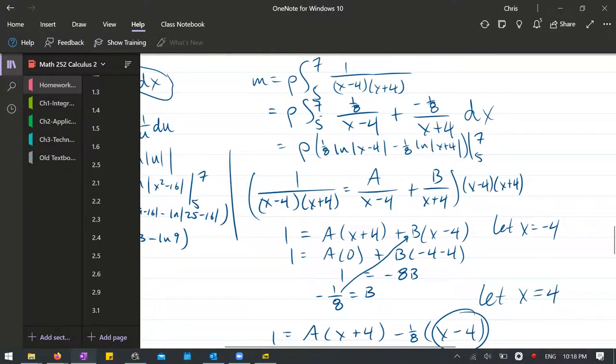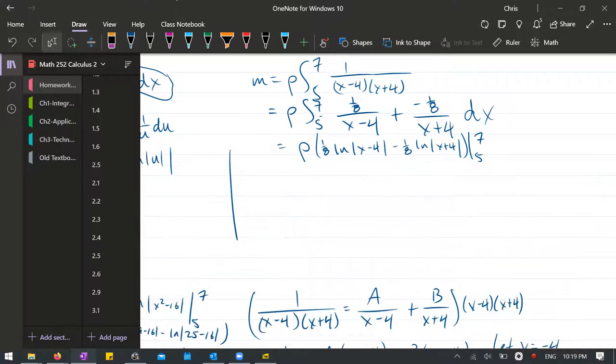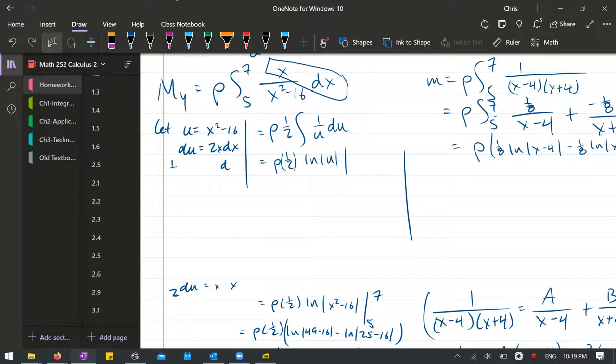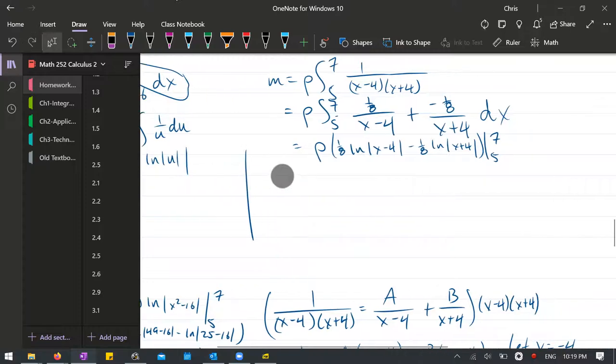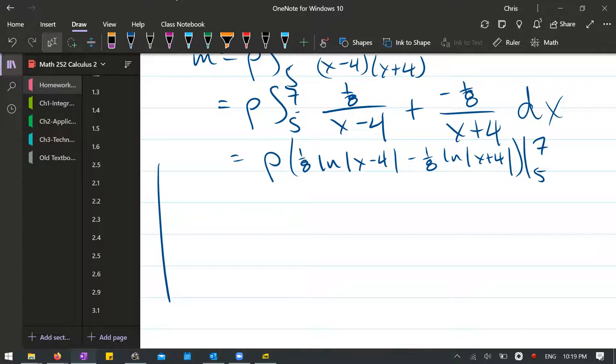I need some more room. So I'm going to cheat and just make it. Hopefully you saw it before and copied it down. Now we're going to plug in the 7 and then the 5. Before we do that, let's get that eighth out of there. It's in both. So we'll write this as rho times an eighth, ln x minus 4 minus ln x plus 4 from 5 to 7.